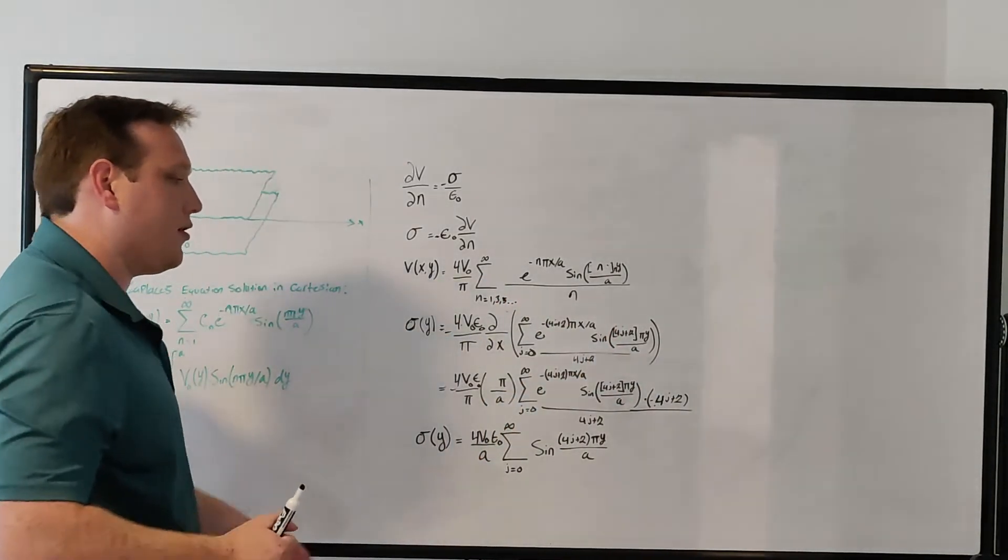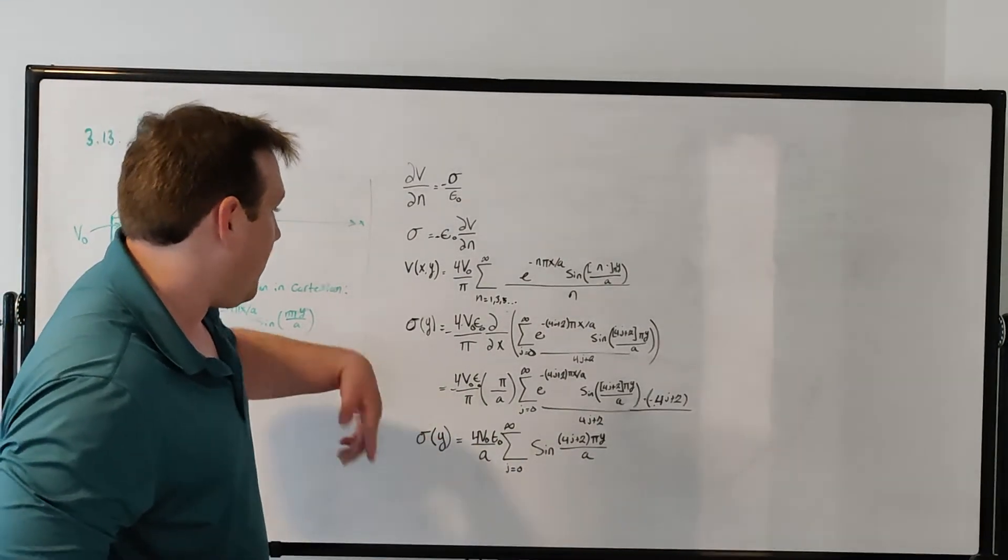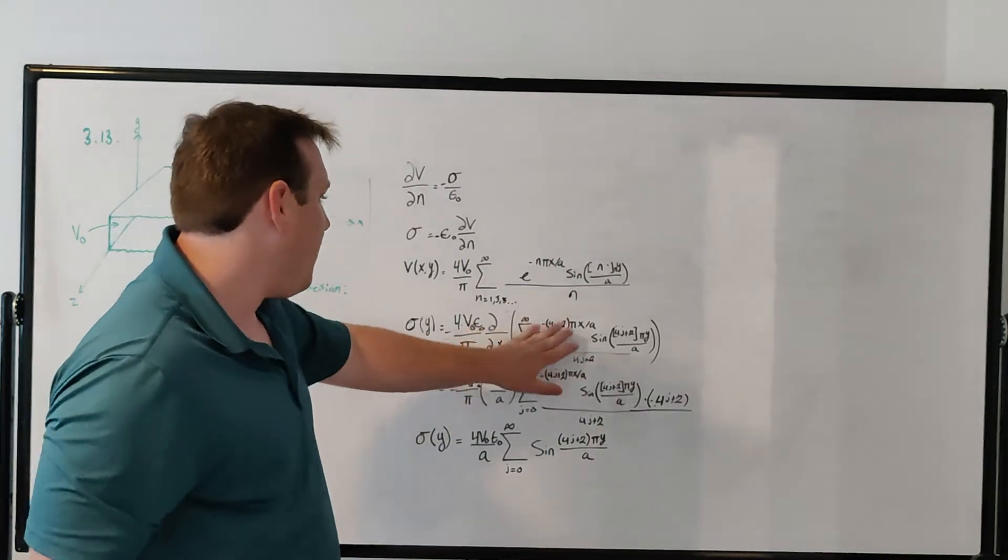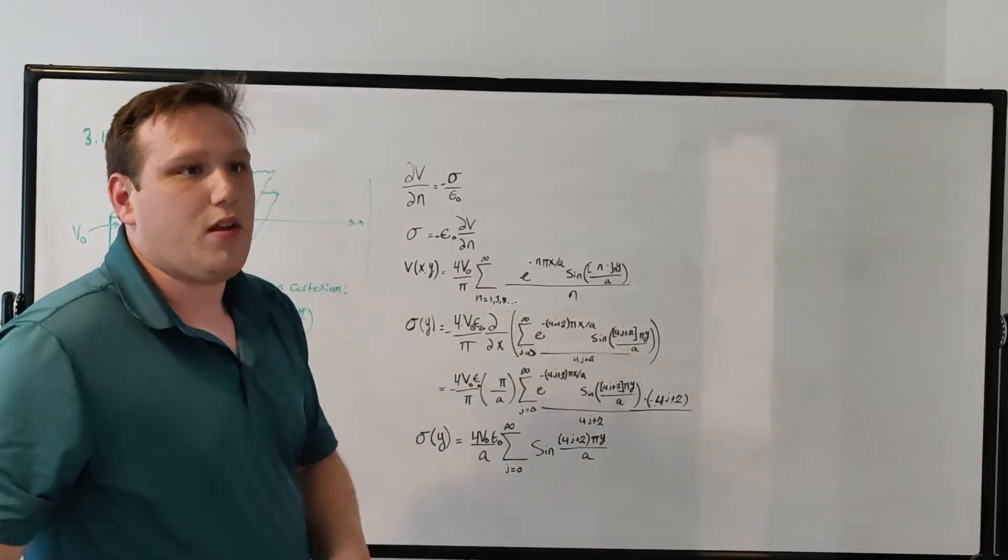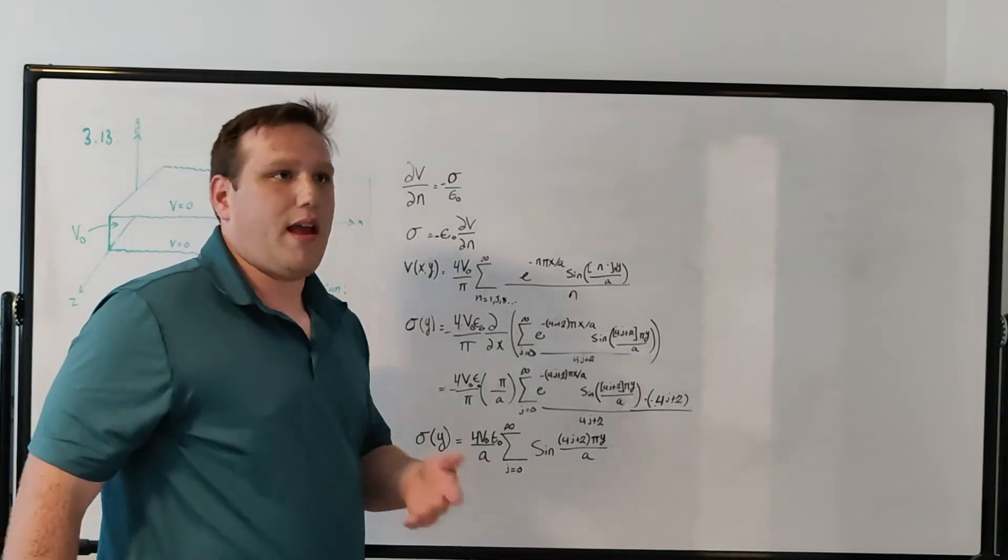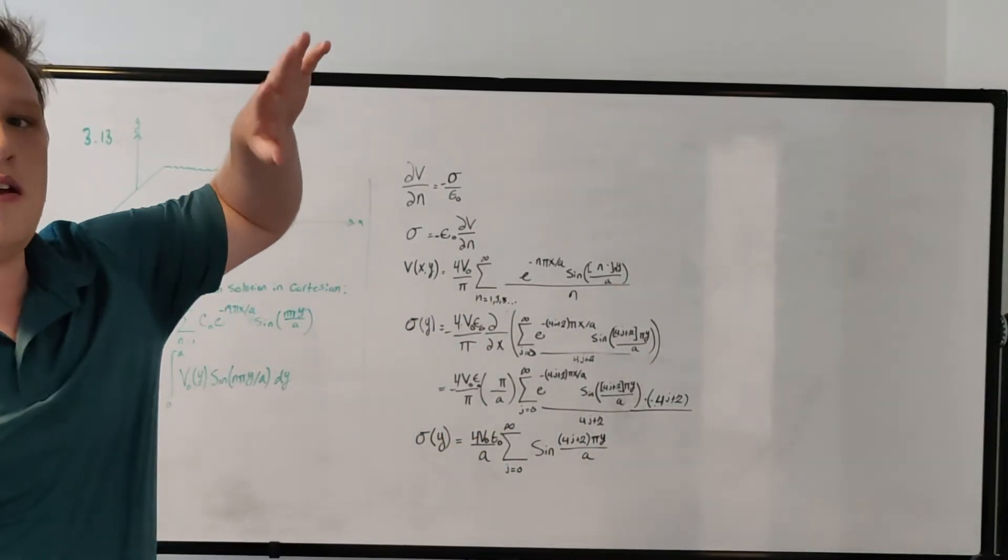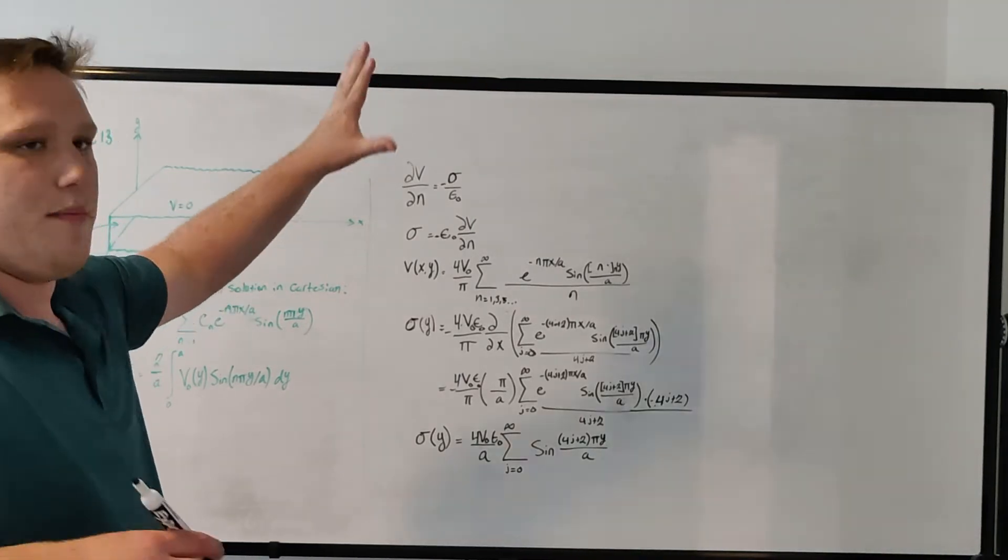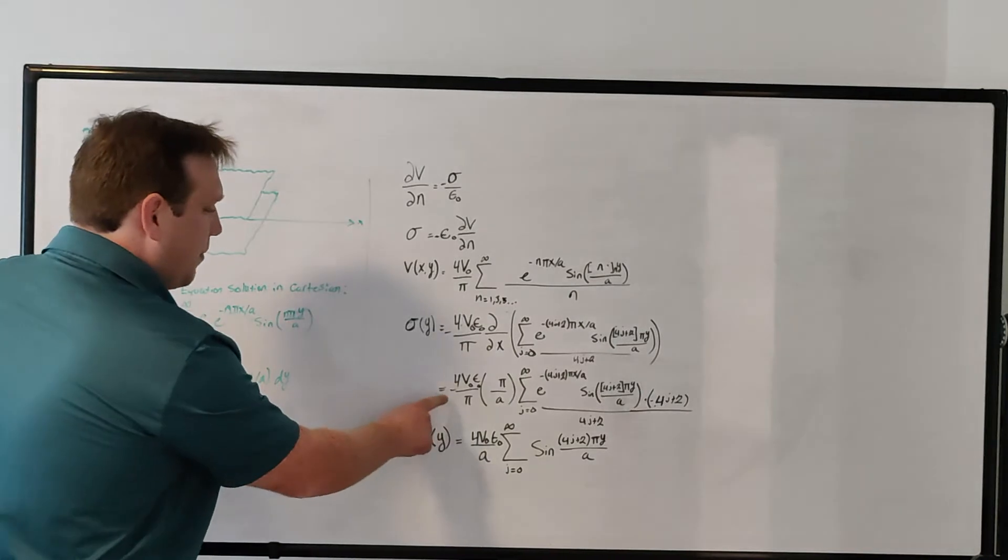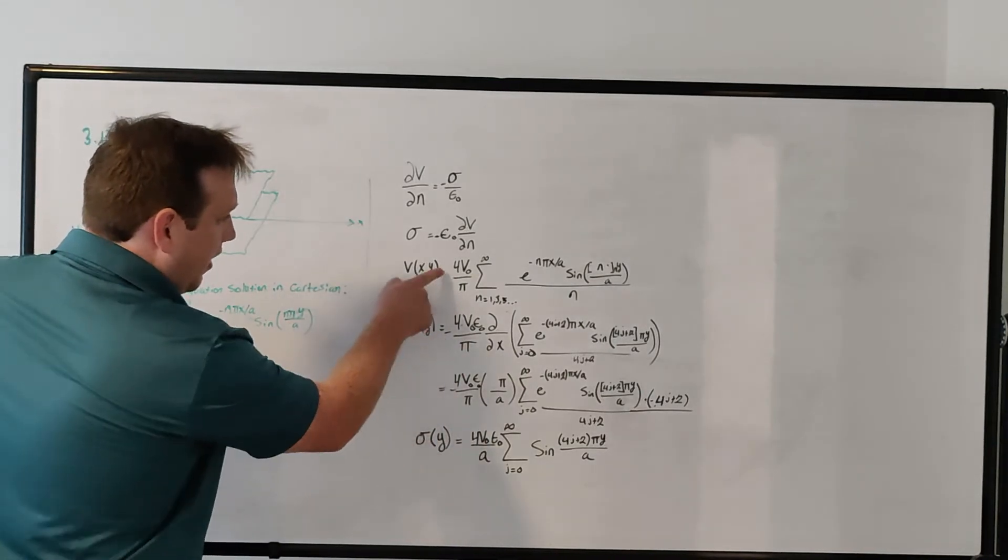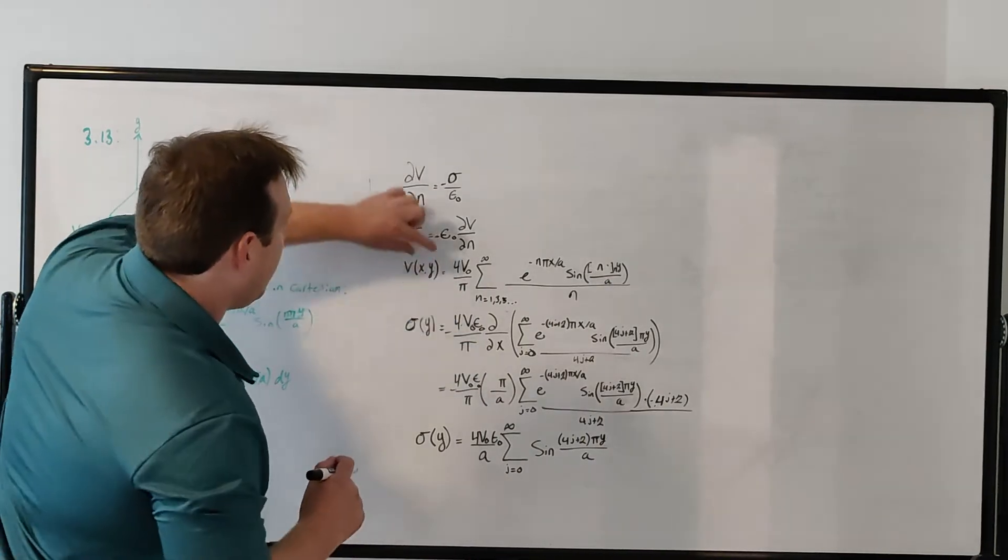Doing the actual derivative, the only piece of this function that depends on x is the exponential function. The derivative of the exponential function is itself, and if it has any extra arguments in the exponent, you just multiply it by that. So the derivative becomes, we get a minus sign here. The minus sign comes from this equation.